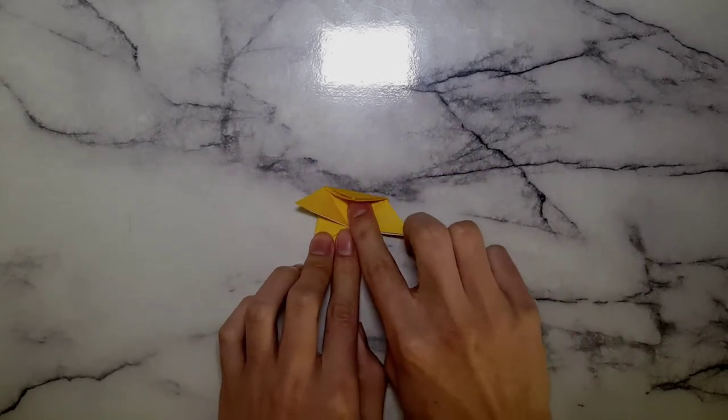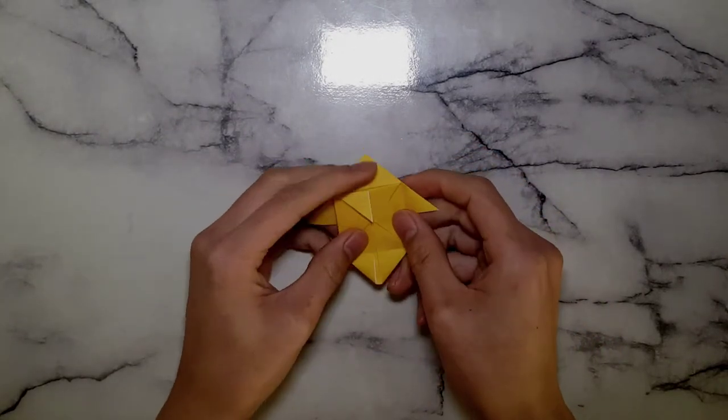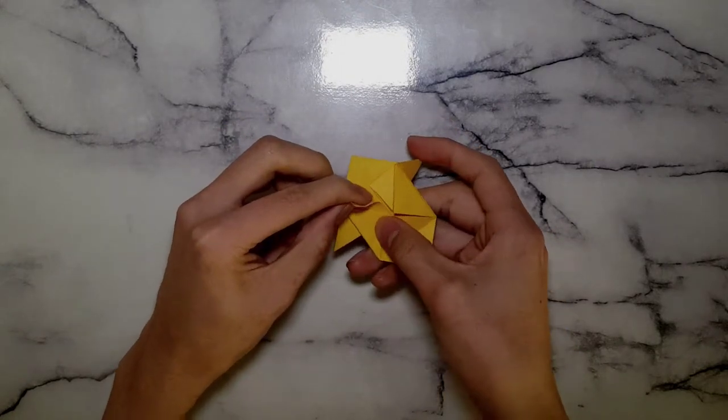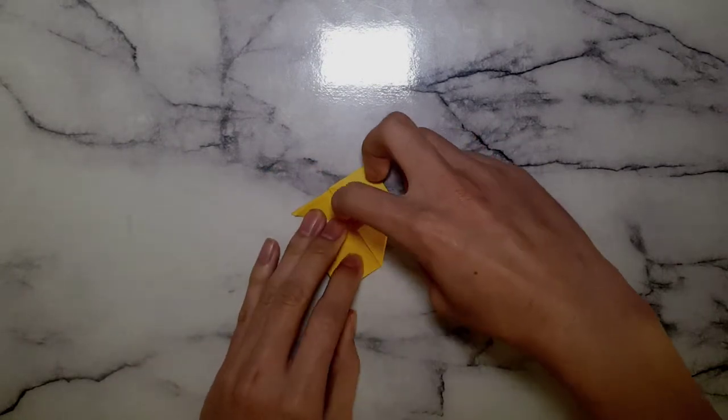Now we fold the top, the entire top part down. And that should give us a crease. Flip it over. And with the two triangles we just folded on the top, we're going to fold them all the way out like we did with the other side.